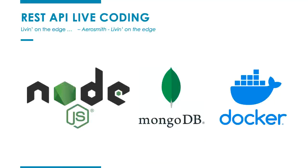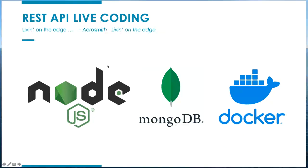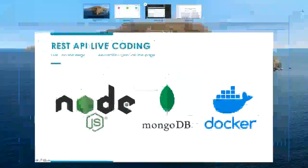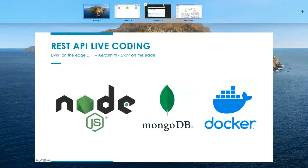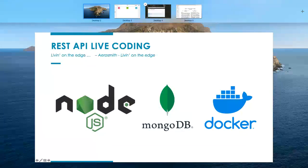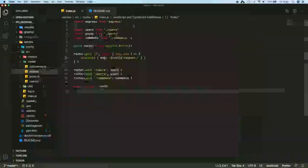Let's do some live coding - and that's why the subtitle is 'living on the edge,' because live coding is a really risky thing to do. We'll be checking out this application, built on Node.js. Its database will be MongoDB, which is a non-relational, object-based database. Docker will be the thing connecting our whole environment together.